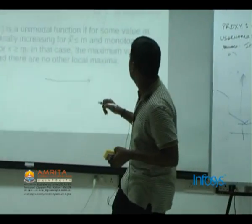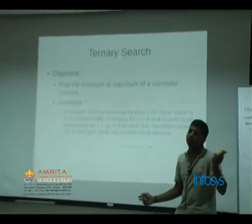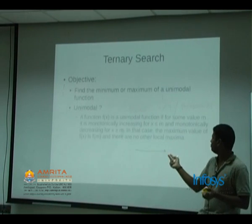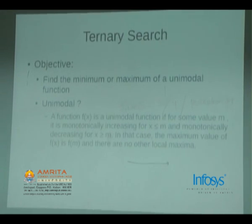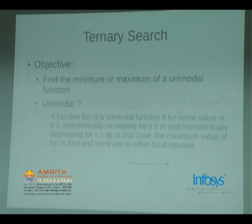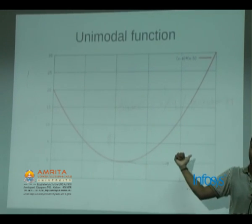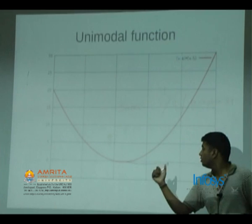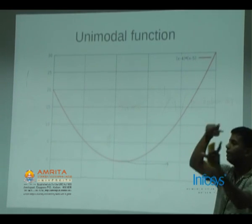By the Wikipedia definition, a function is unimodal for some value m if it is monotonically increasing for values less than or equal to m and decreasing for values greater than or equal to m, with the maximum at f(m). Note that a horizontal line is also considered unimodal as a boundary case, since it is neither decreasing nor increasing. A quadratic like (x−4)(x−5) is unimodal: it decreases to a minimum and then increases.